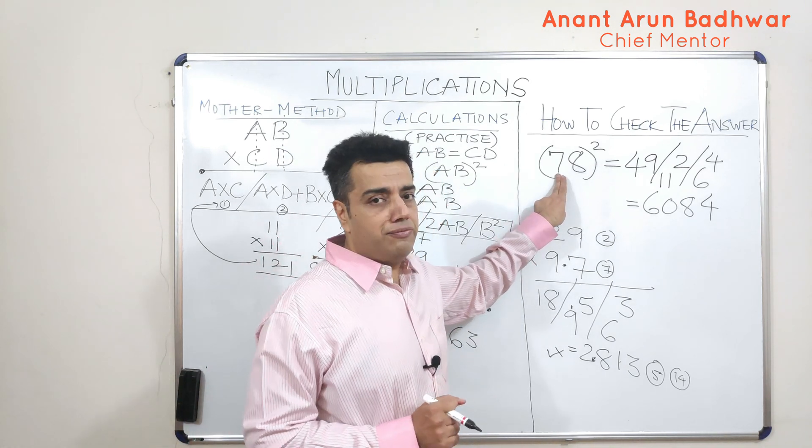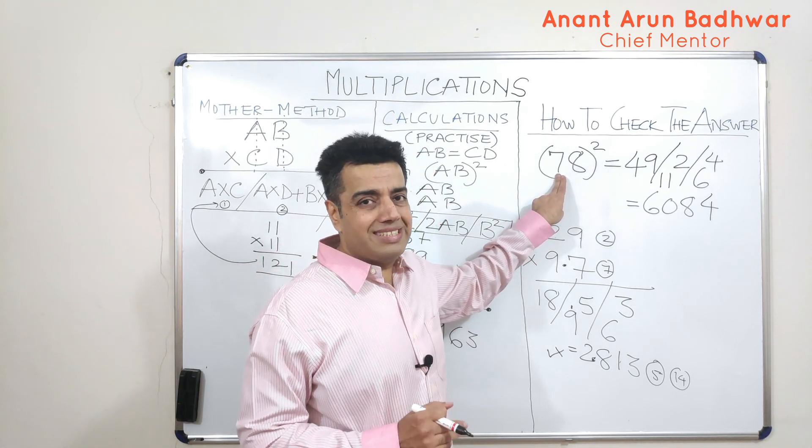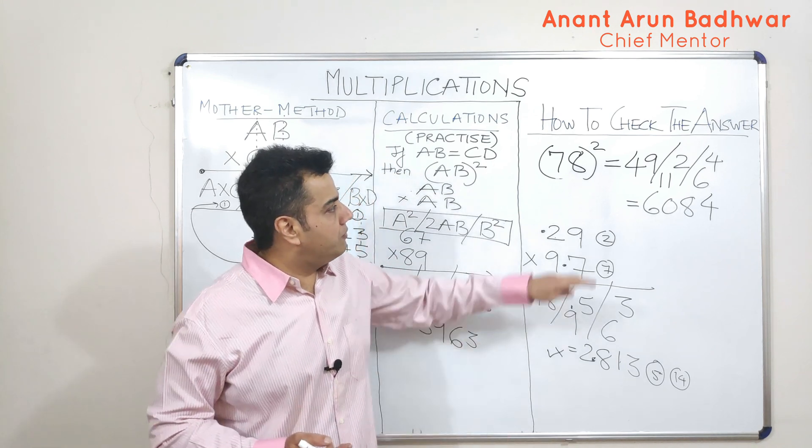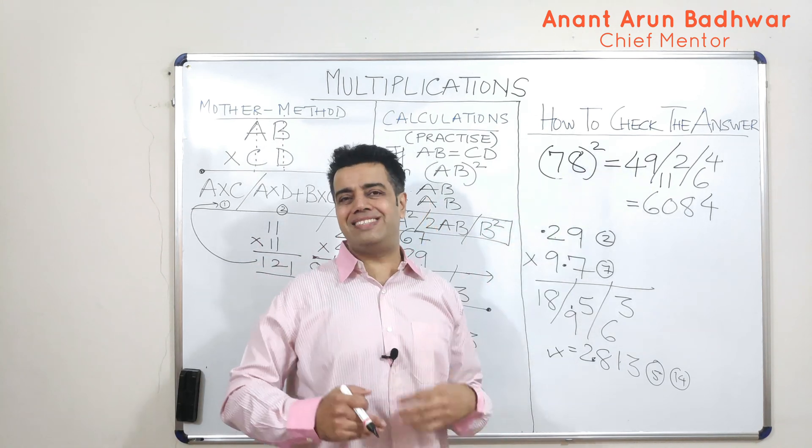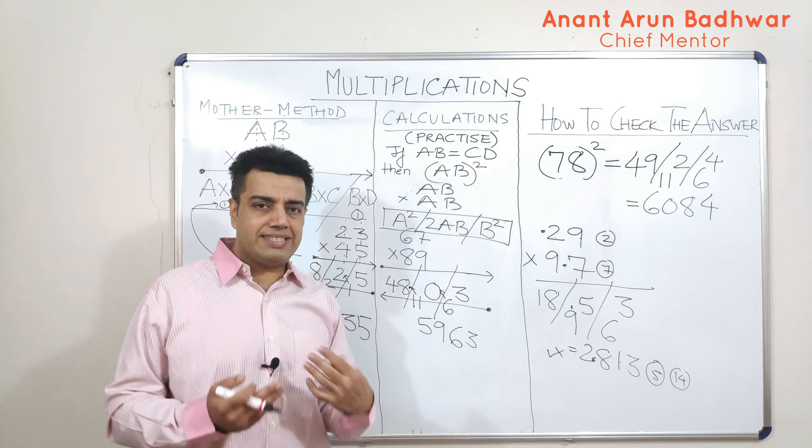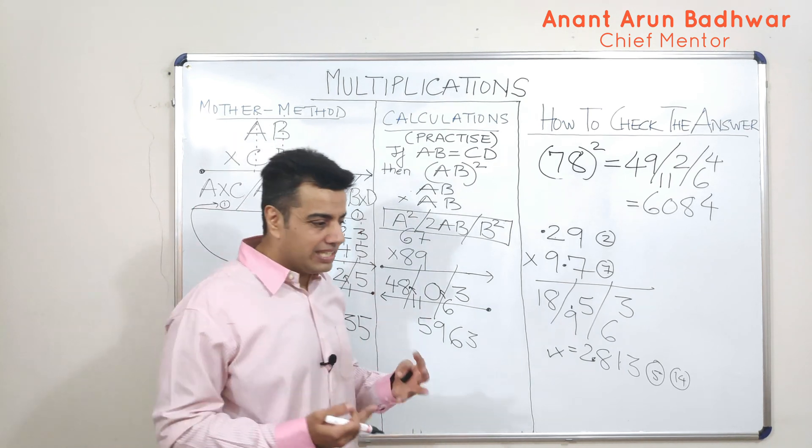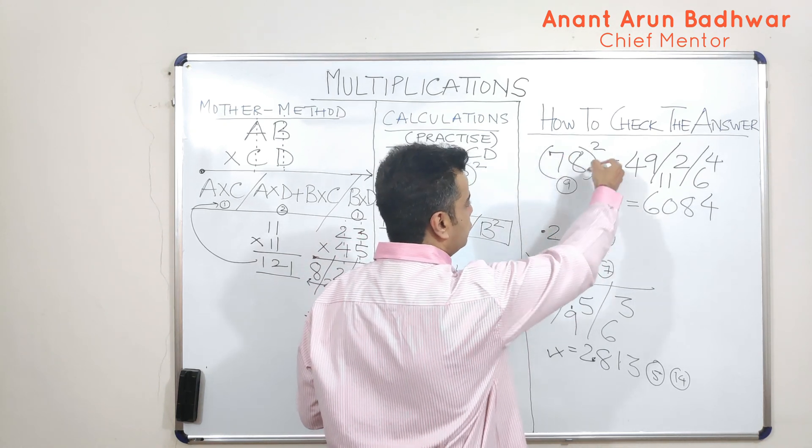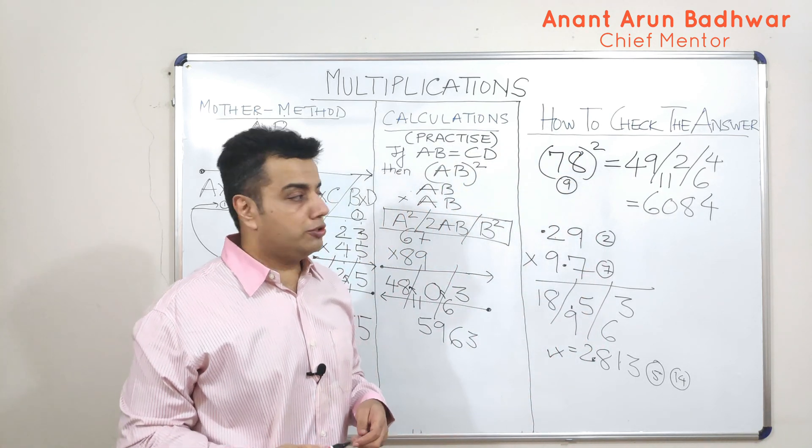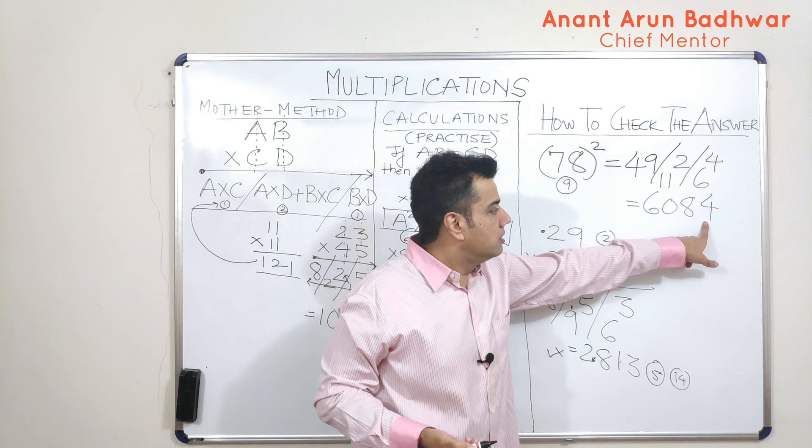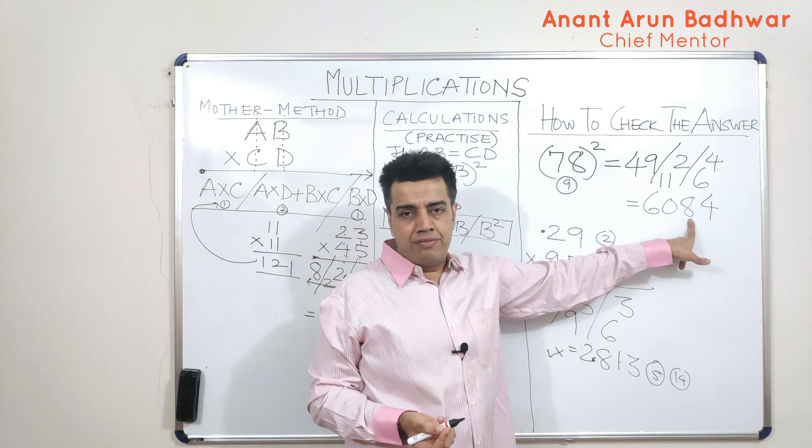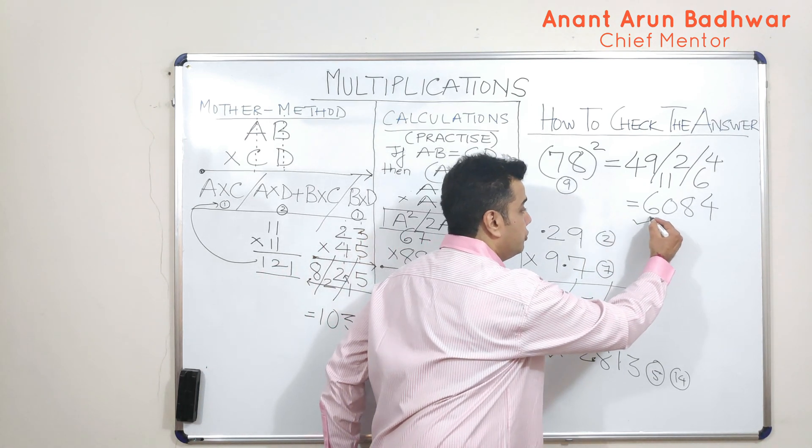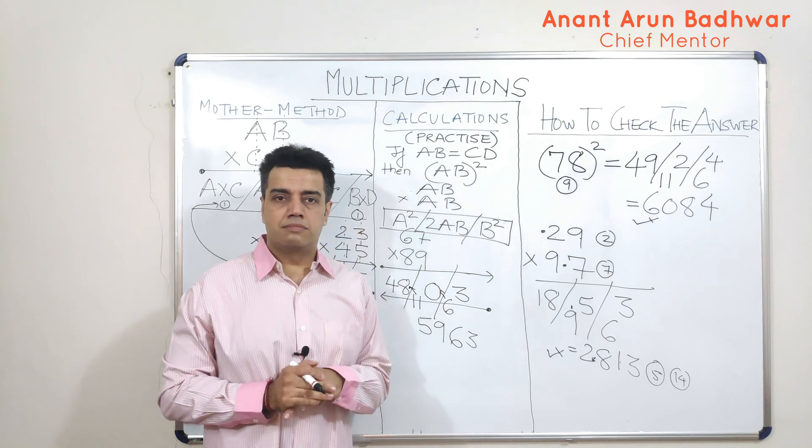Similarly, let us do for this. How much is 8 plus 7? 15. How much is 1 plus 5? 6. So, the digital root of the number 78 is 6. But here, we were supposed to find out the square of this. How much is 6 square? 36. Now 36, the digital root of 36 is what? 6 plus 3, which is 9. In short, the digital root of the square of 78 should be 9. Let us check whether we are getting a 9 here or not. How much is 8 plus 4? 12. 12 plus 6? 18. 18 means 1 plus 8? 9. That means the answer should be correct.